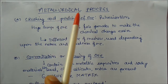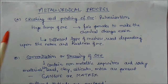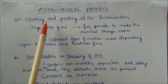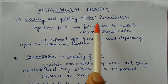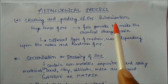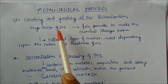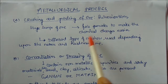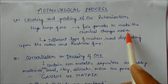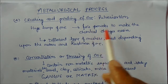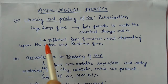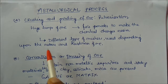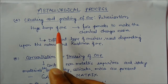Let us see different types of metallurgical processes. Number one is crushing and grinding of ores, another name for this is pulverization. In this process, huge lumps of ores are converted into fine powder to make chemical changes easier. If the powder is fine, it is easier to make the chemical changes. Different types of crushers are used depending upon the nature and hardness of the ores.